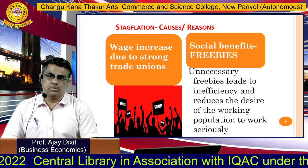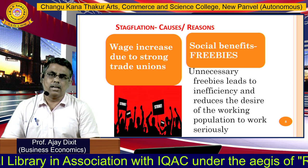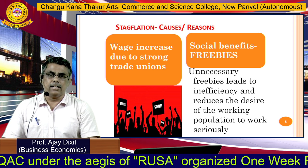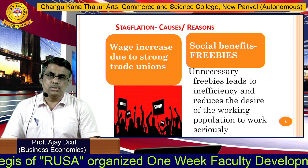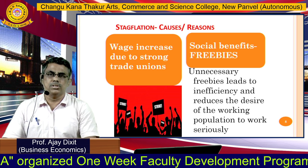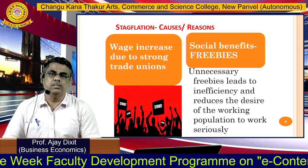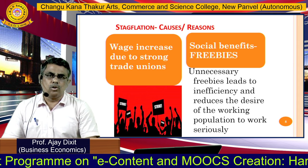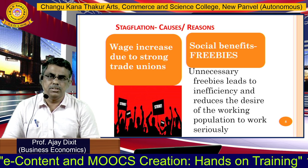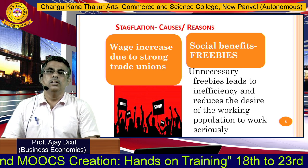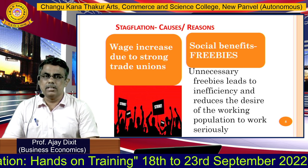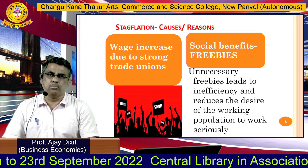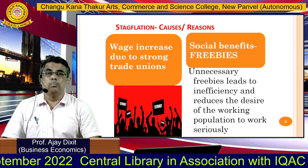Another cause is wage increases driven by trade unions. Trade unions resist wage cuts that companies want to implement, but there is no corresponding increase in productivity. So cost of production increases, leading to inflation. Social benefits — what we call freebies nowadays — also contribute: unnecessary freebies lead to inefficiency, reduce production, and reduce the desire of the working population to work seriously, which reduces output while costs increase.